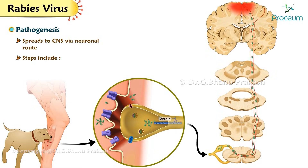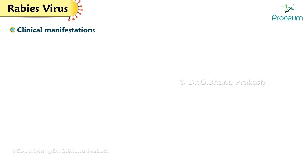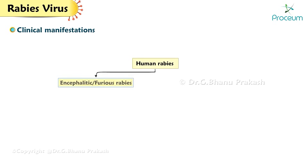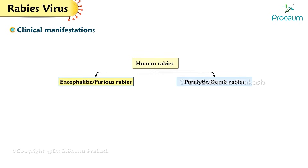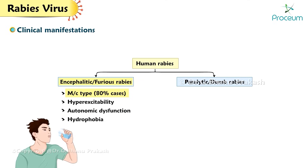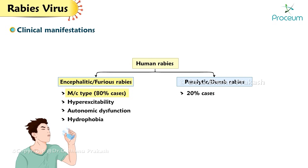Via neuronal dysfunction, human rabies presents in two forms: encephalitic and paralytic. Encephalitic or furious rabies is the most common type, accounting for 80% of cases, and is characterized by hyper-excitability, autonomic dysfunction, and hydrophobia. Paralytic or dumb rabies accounts for 20% of cases.